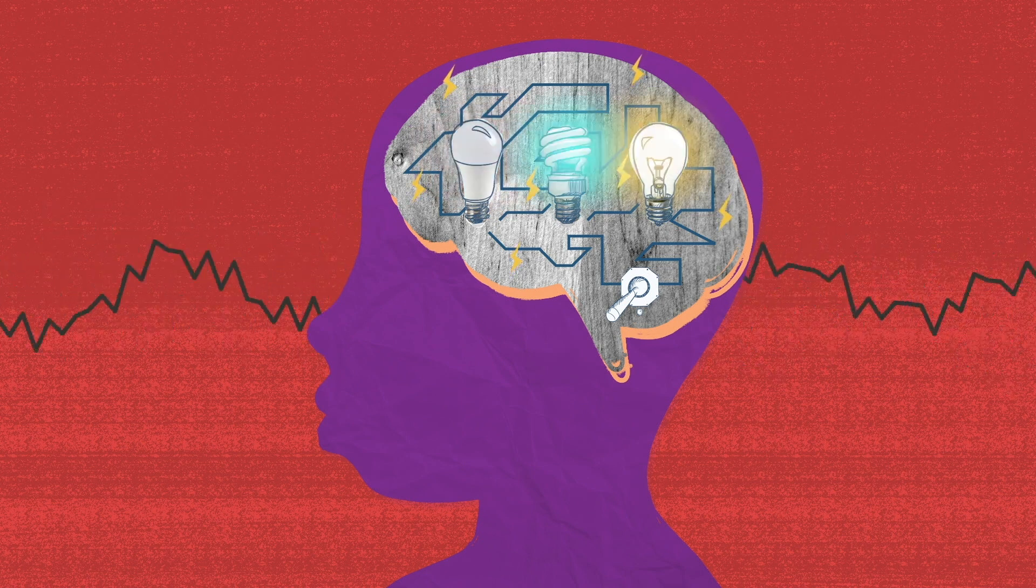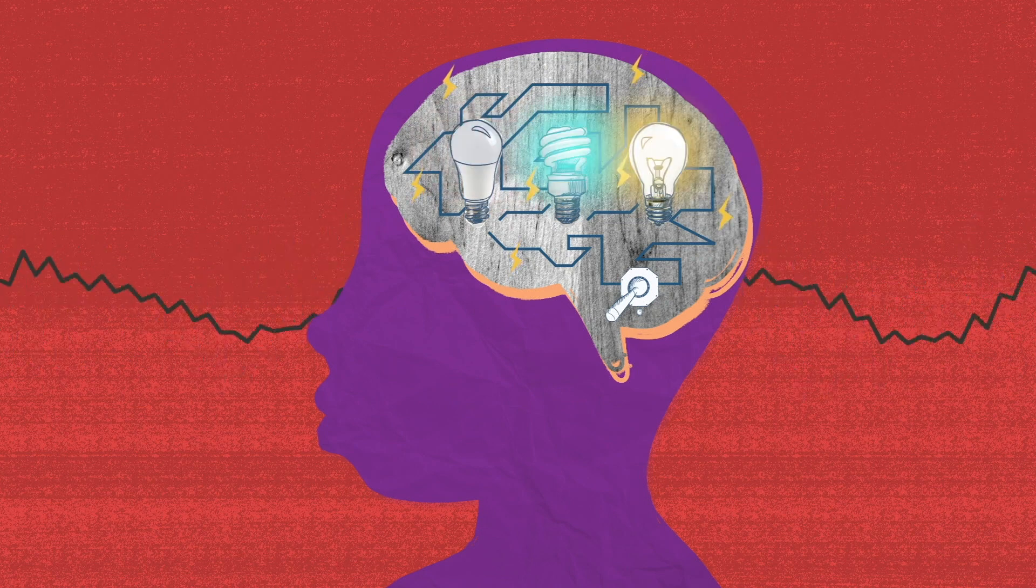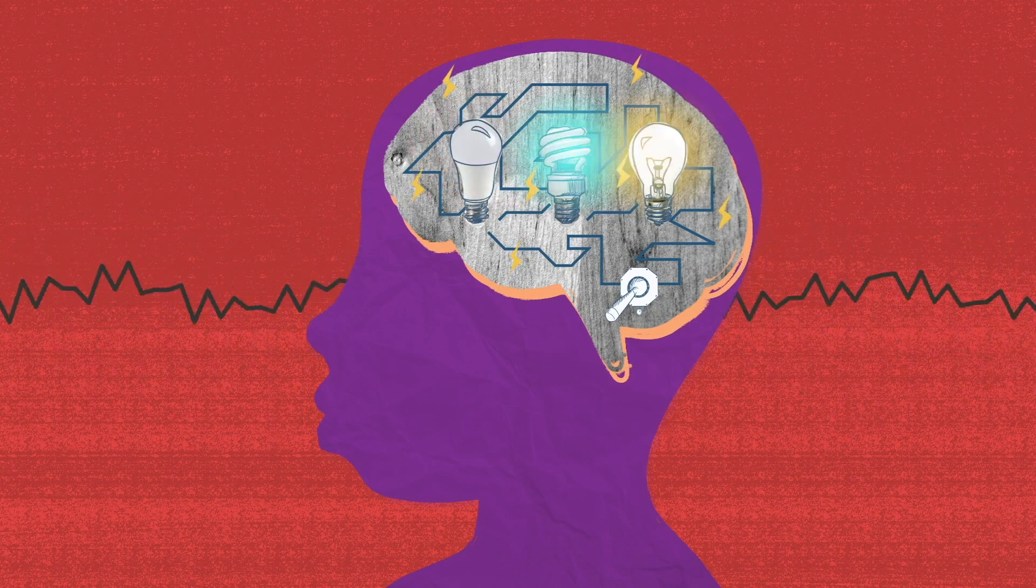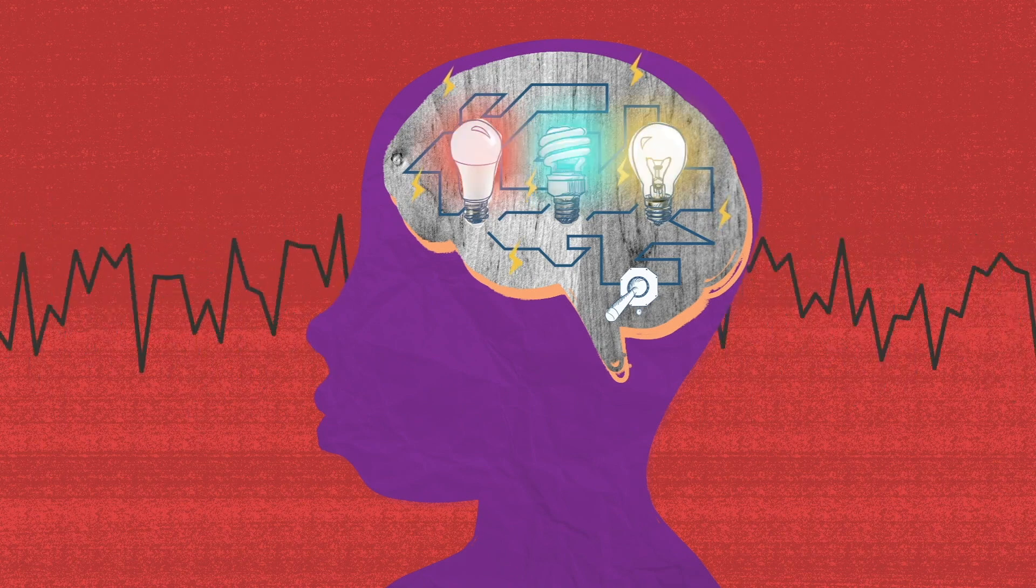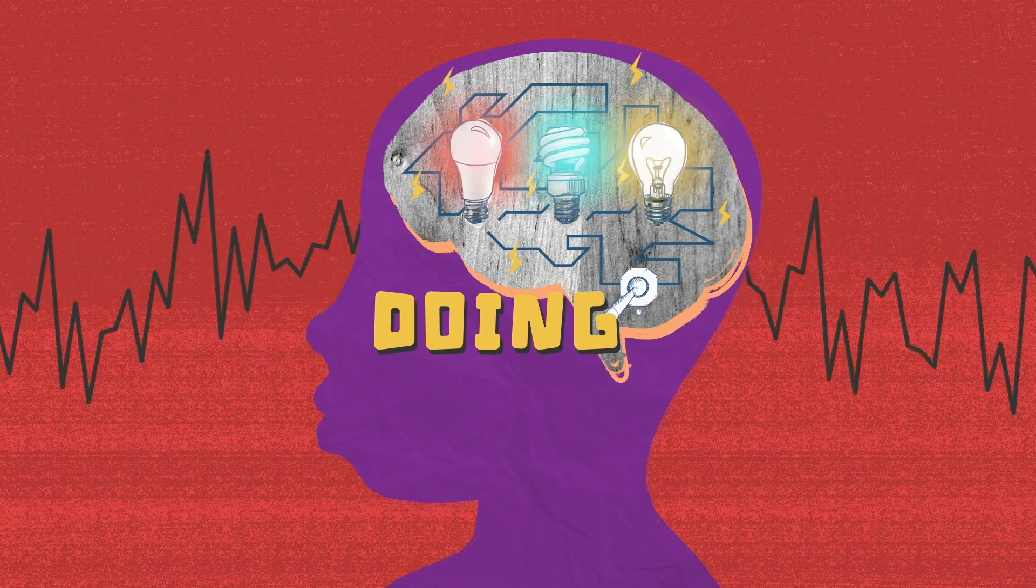Your brain is always active. Most of the day, it tries to work out the steps necessary to perform a task. It is always searching your memories for previous experiences and knowledge. We call this the doing mode of your brain.